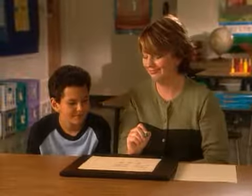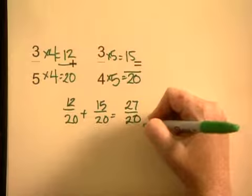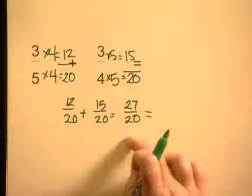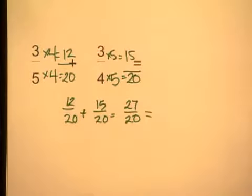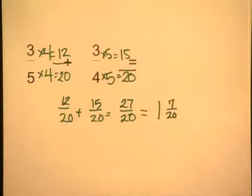Do you notice anything improper about that? Is 27 bigger than 20? Yes. Can we have a fraction where the numerator is bigger than the denominator? No. So how many twentieths go into 27? 1. And how many twentieths do we have left over? 7. So we have 1 and 7 twentieths as our mixed number.